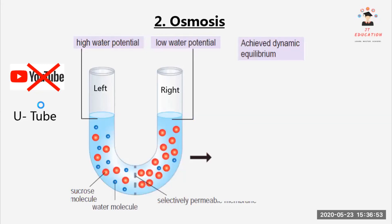This is a U-shaped tube with a selectively permeable membrane in the middle. On the left side, we can see there are fewer sucrose molecules, therefore it has a higher water potential.